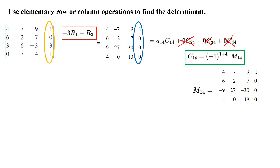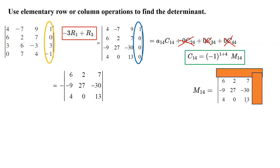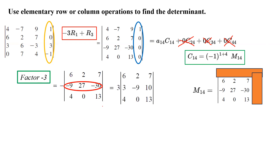The minor for the first row and the fourth column can be found using the determinant of this three by three matrix. So all you need to do is multiply this determinant by negative one — because you have a negative one here — and calculate this determinant. Our goal is to calculate negative the determinant of this three by three matrix. Pay attention: you have negative nine, 27, negative 30, so you can easily factor out negative three. When you factor out negative three, it becomes three times the determinant of this three by three matrix.